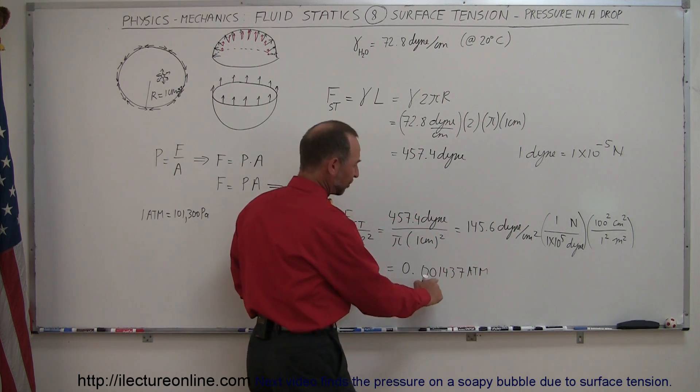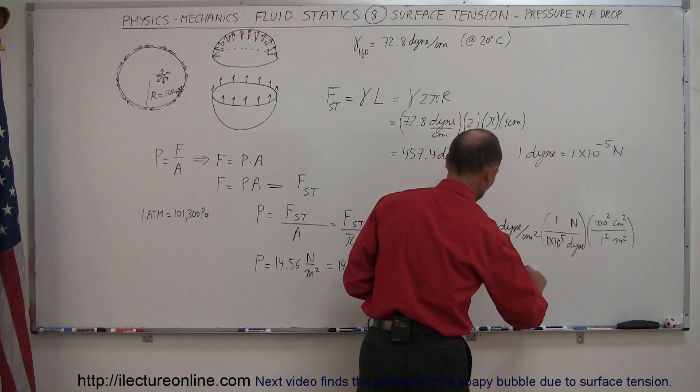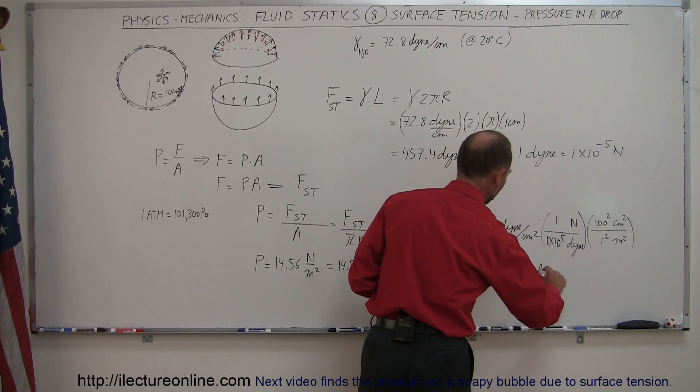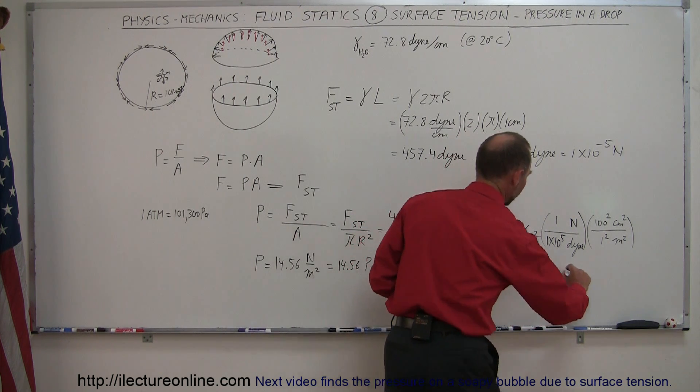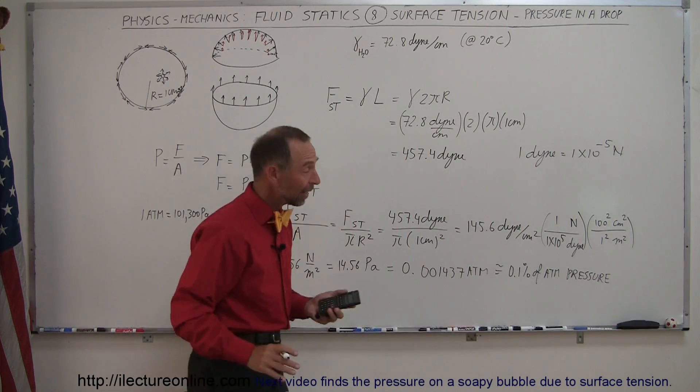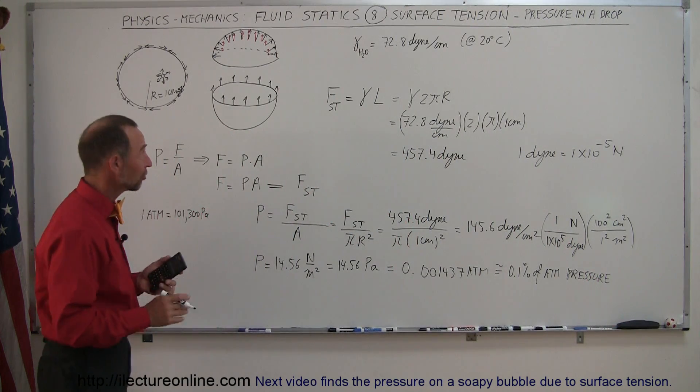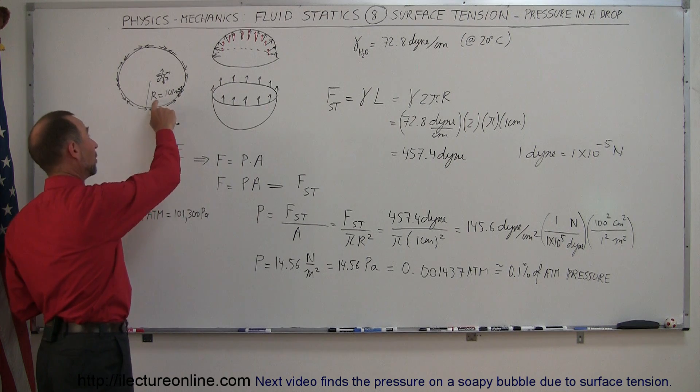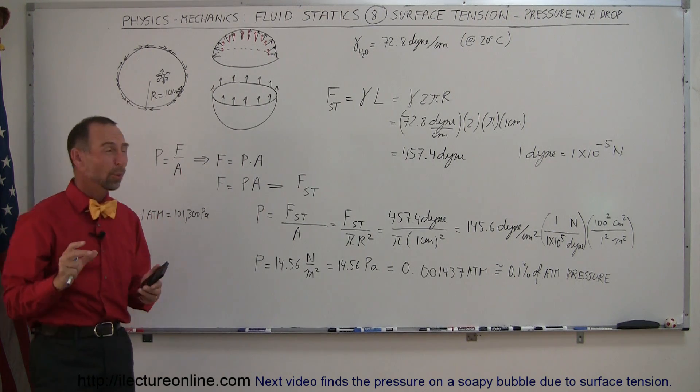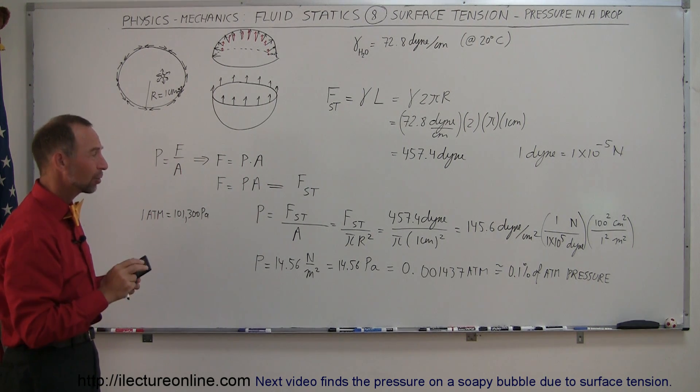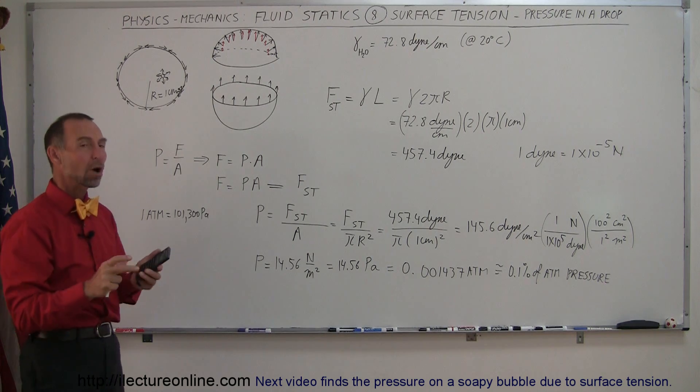And so that would be about roughly 0.1 percent of the atmospheric pressure. So notice it's not a lot of pressure build up inside a water drop, but remember we took a water drop with a radius of one centimeter. What would happen if we now took a water drop that had a smaller radius?